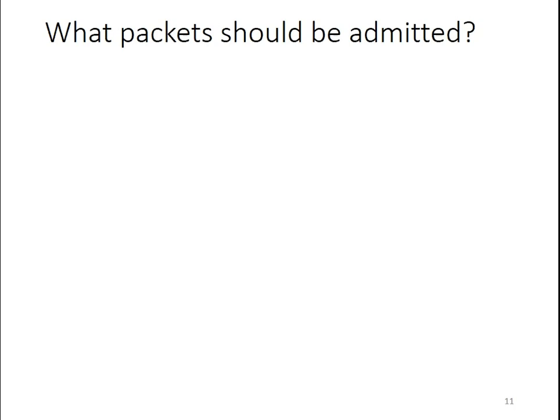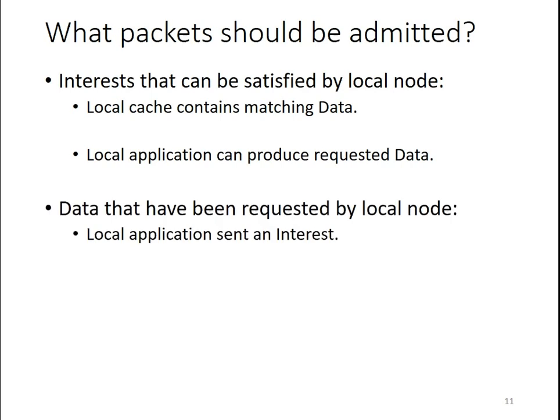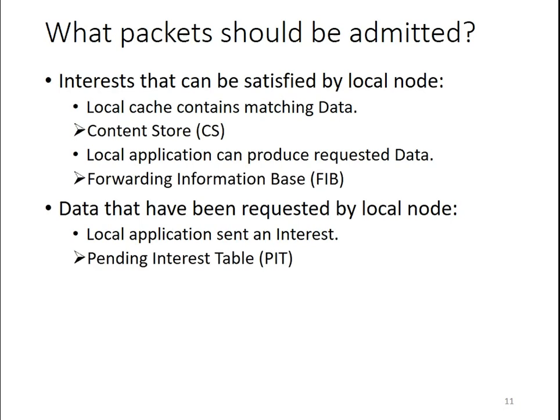What names should we put in the bloom filter? An NDN host should admit interests that can be satisfied locally — either the local cache contains matching data, or a local application can produce the requested data. The host should also admit data that has been requested by the local node. These three cases are represented in three name-based tables in NFD: the content store (the cache), the forwarding information base (FIB), and the pending interest table (PIT).